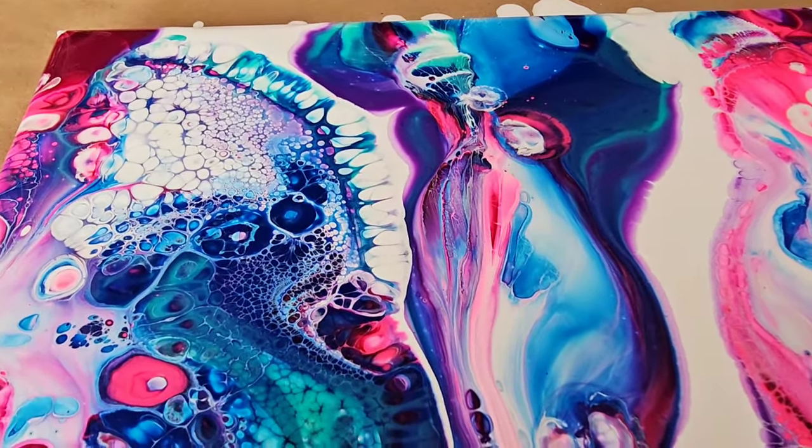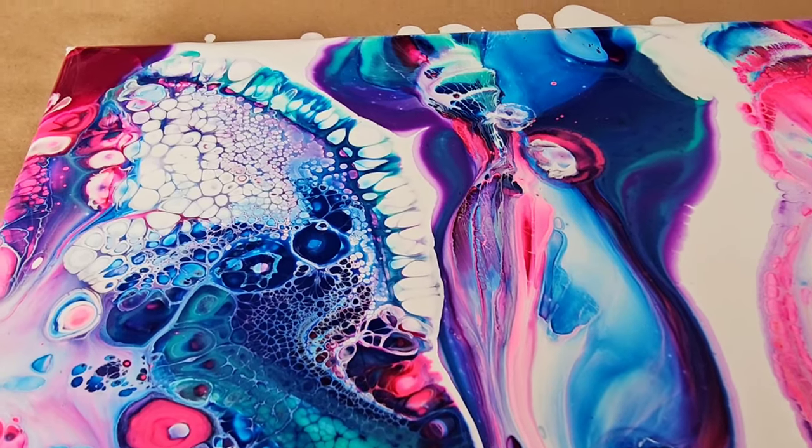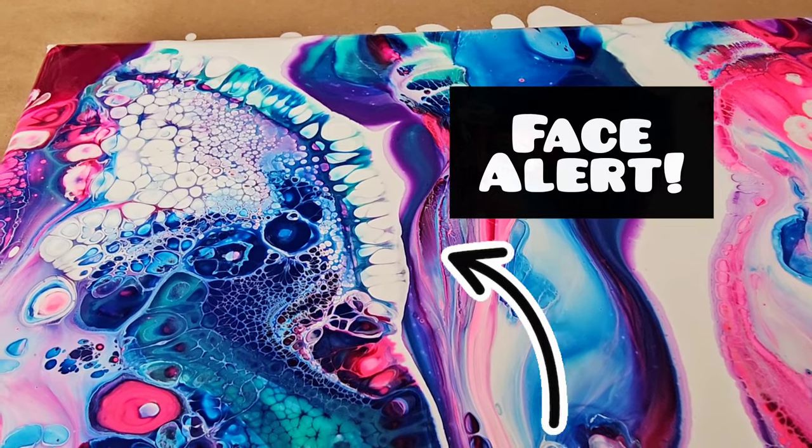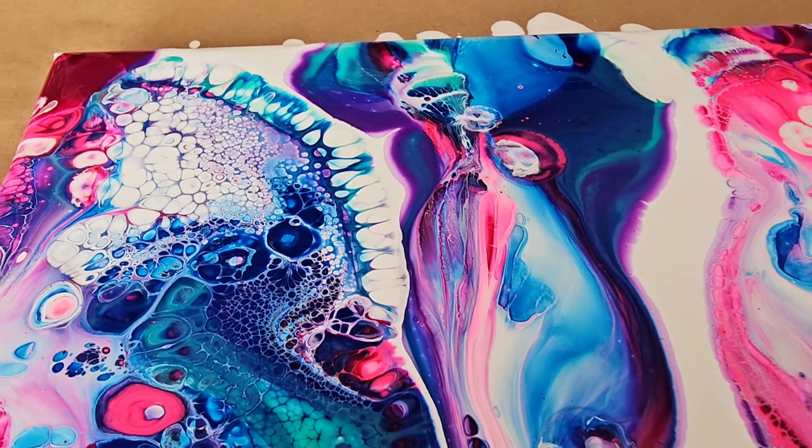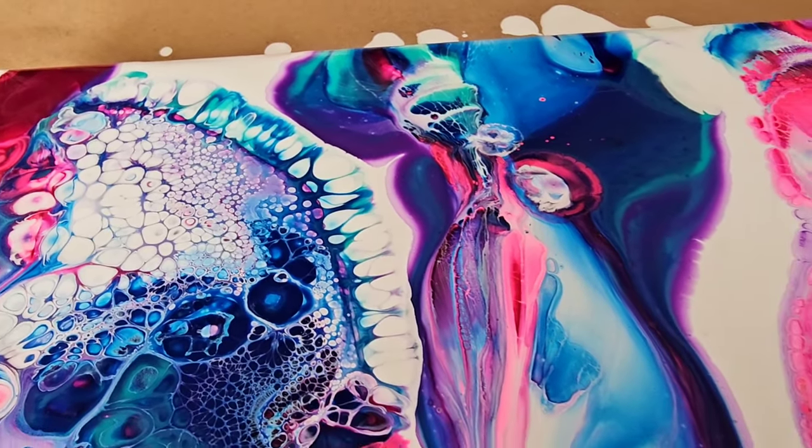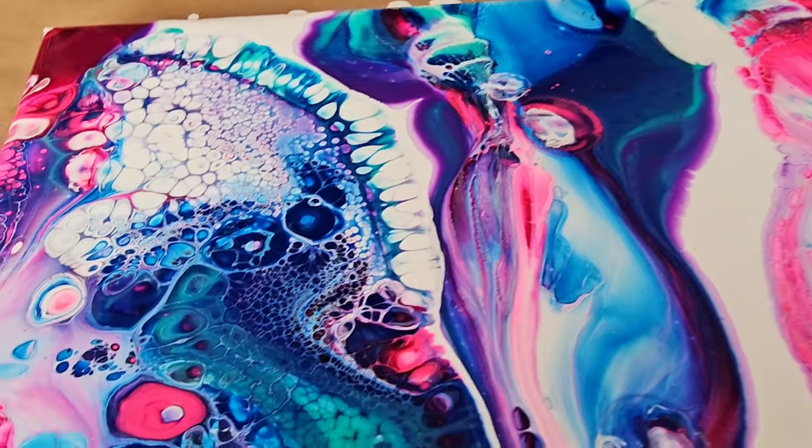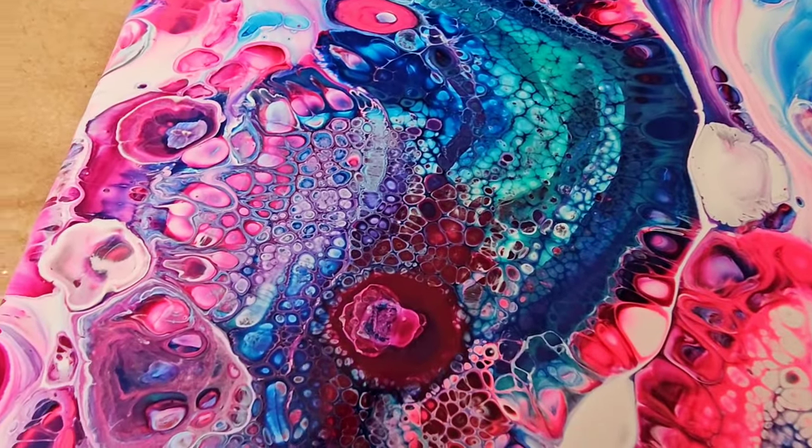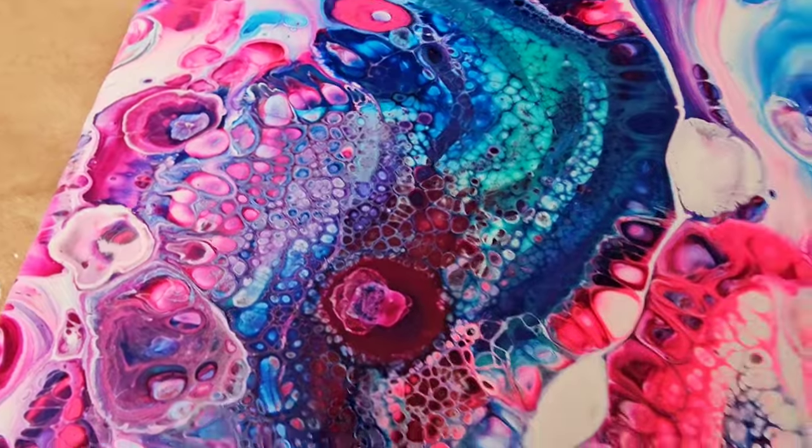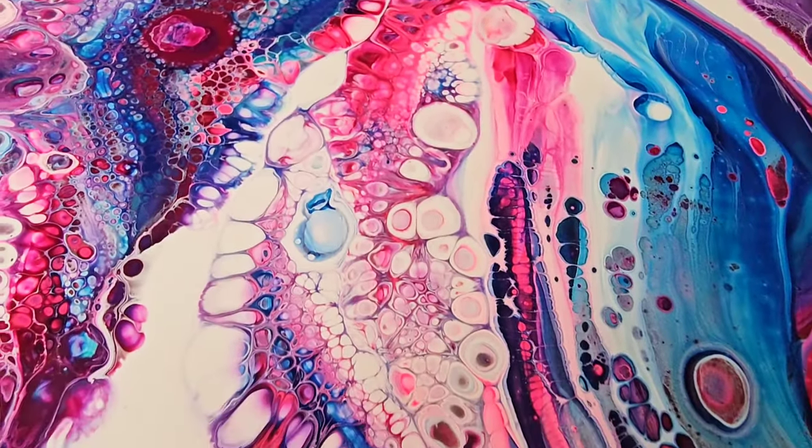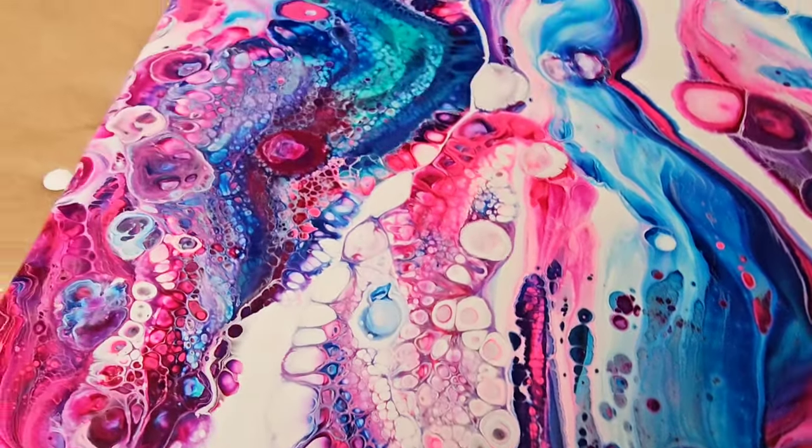Look at this over here. This is the best pouring medium ever. I'm going to tell you what it is in a minute, but look at this. You get the look like when you dip a toothpick into silicone and dab it in the painting, that chameleon cell, you get those corn cob looking cells. You get a ton of lacing. You get average regular cells. You get bloom cells. It's like all in one. You get pouring medium cells. You get all of them. Look at this. I mean, come on now.